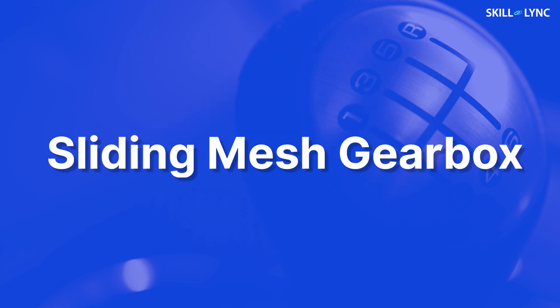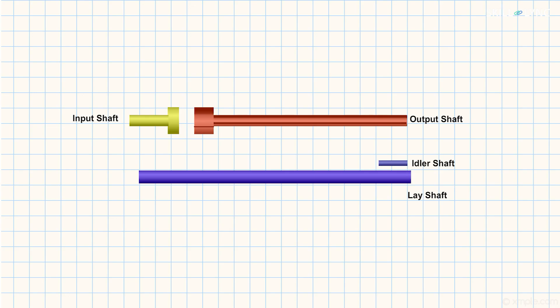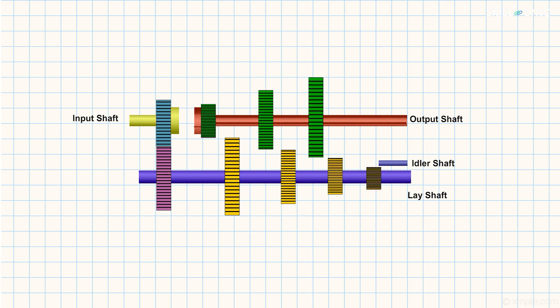Now, let us move on to see the very basic type of gearbox — the sliding mesh gearbox. A sliding mesh gearbox consists of an input shaft, a splined output shaft, a lay shaft, and an idler shaft. The input shaft is the clutch shaft and the output shaft transmits motion to the wheels. There is a clutch gear attached to the input shaft and it is in constant mesh with a fixed gear on the lay shaft. So, the lay shaft rotates whenever the input shaft rotates. The output shaft and the lay shaft consist of three and four gears respectively, and there is also an idler gear in the idler shaft.